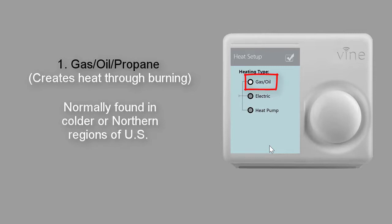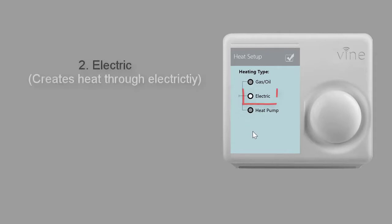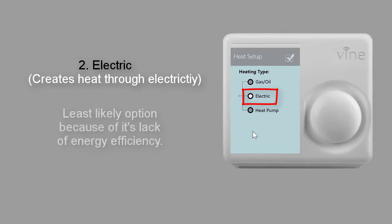The second option is electric, which creates heat through electricity. It uses electricity to charge the heating element or heating strips. This is the least common system because it is not energy efficient in comparison to the other systems.